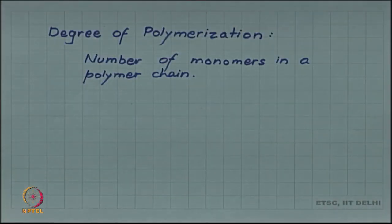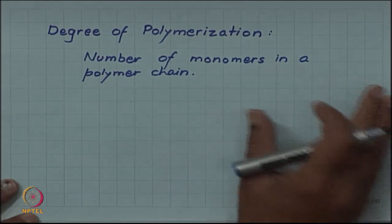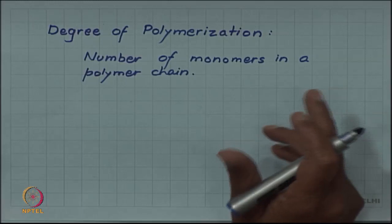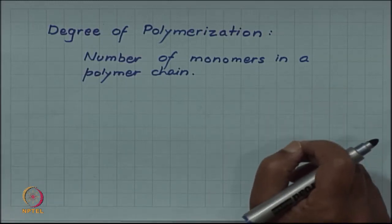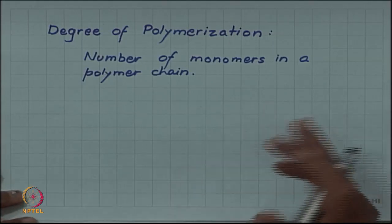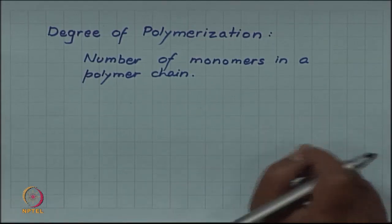There is also a term degree of polymerization, which is the number of monomers in a polymer chain. This tells us how long the polymer is. Many of the properties of polymer depend upon the length of the polymer chain or the degree of polymerization.